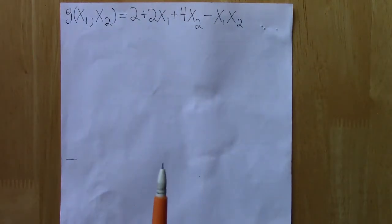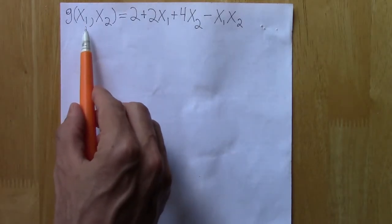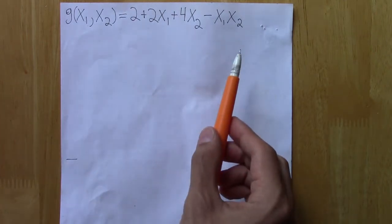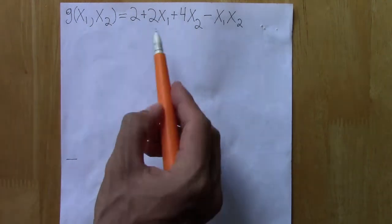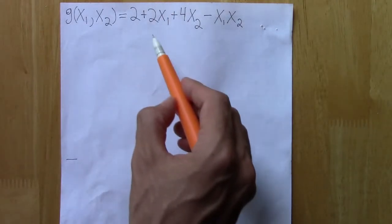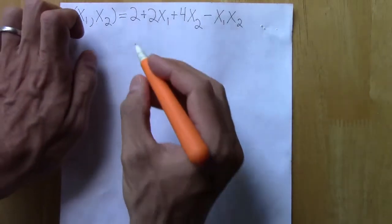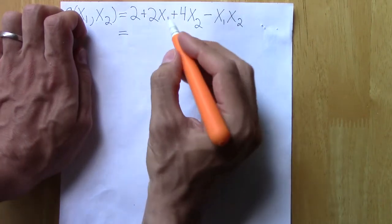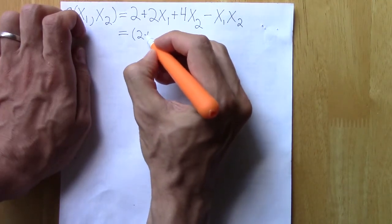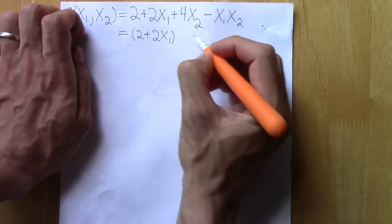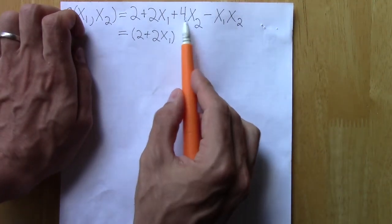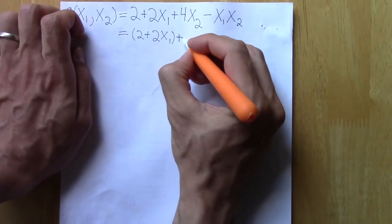One way to think about functions like this is to plug in different values of x₁ and see what results as a function of x₂. The first step for doing that is we could rewrite this, thinking of x₁ as just a constant and write it as intercept plus slope times x₂. In this particular case, we think of x₁ as a constant, the intercept is these first two terms together. And then for the slope, we can factor out the x₂ from the remaining terms, and we'll have 4 minus x₁ for the slope.